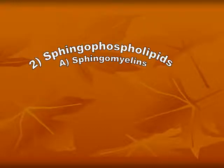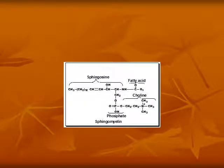Sphingophospholipids, which are called sphingomyelin: sphingomyelin is composed of sphingosine, fatty acid, phosphoric acid, and choline.